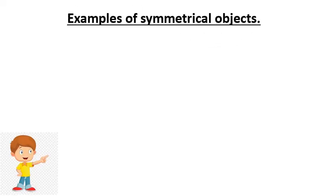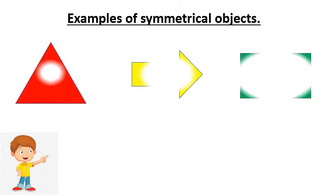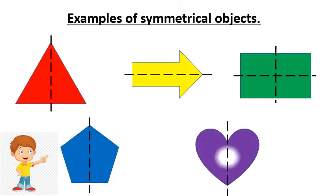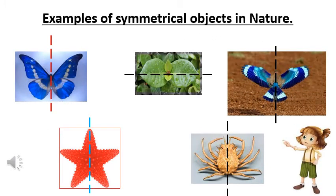Let's see some examples of symmetrical objects around us. Observe the line of symmetry in each shape. Here are some examples of symmetrical objects in nature.